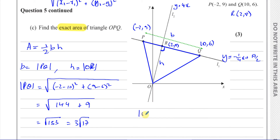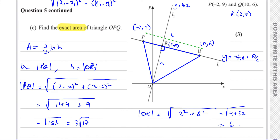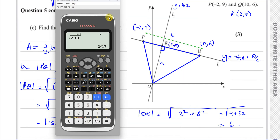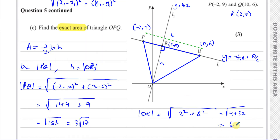Now for the height OR, from O(0, 0) to R(2, 8): square root of (2 − 0)² + (8 − 0)² = square root of 4 + 64 = square root of 68. Note: 8 squared is 64, not 32. Simplifying: square root of 68 = square root of 4 × 17 = 2√17.